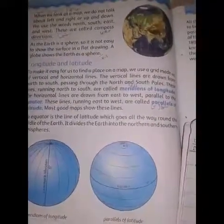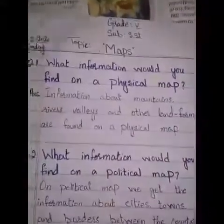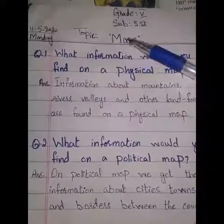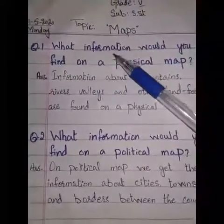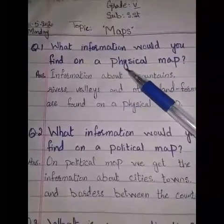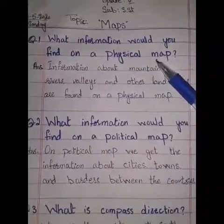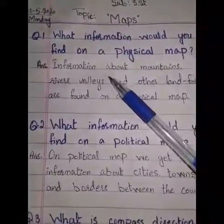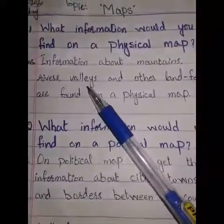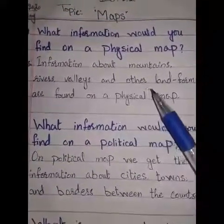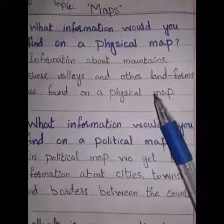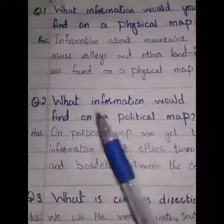Homework topic: Maps. Question number one — what information would you find on a physical map? Answer: Information about mountains, rivers, valleys, and other land forms are found on a physical map.